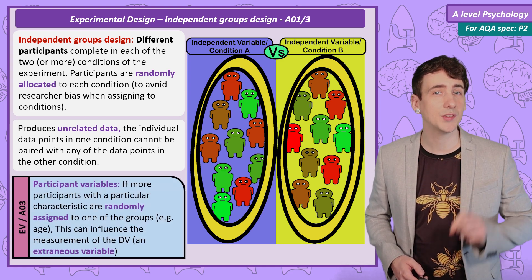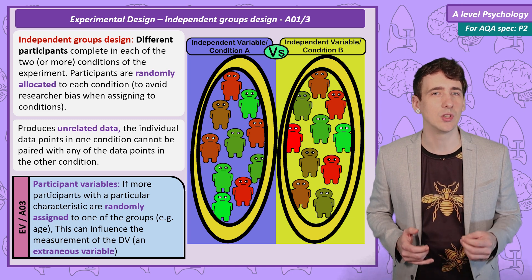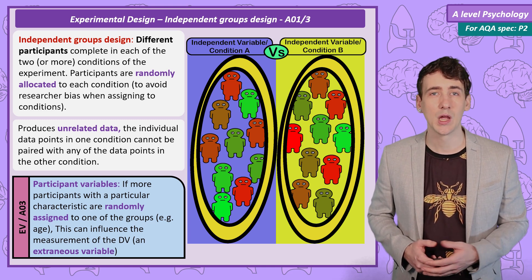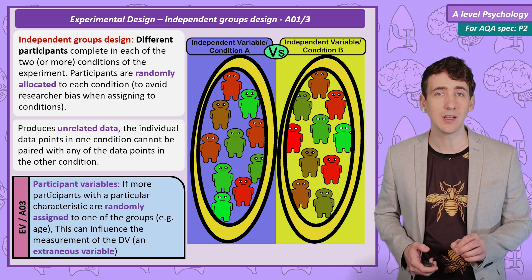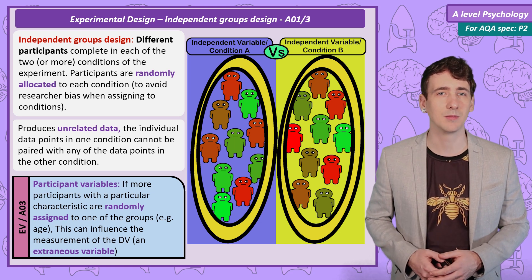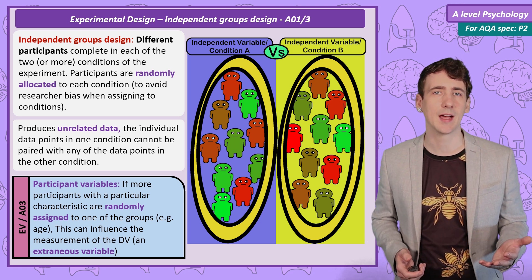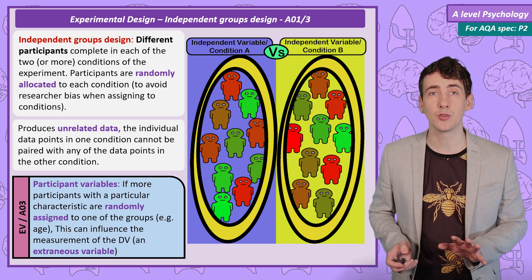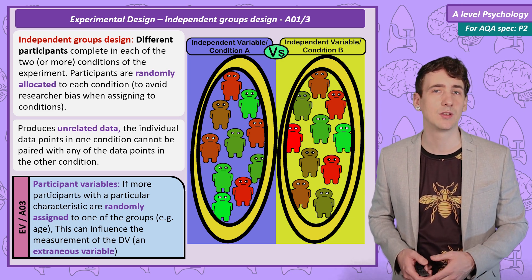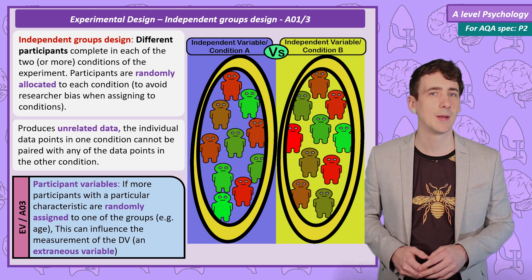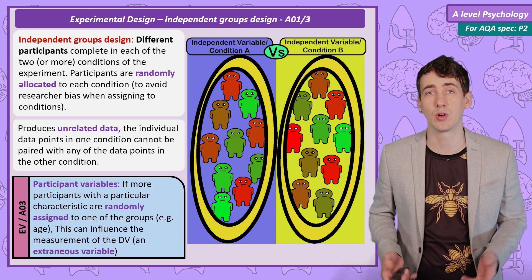Because the groups are not the same people, any change we measure may not be due to the change in independent variable, but due to participant variables — characteristics of the people taking part in each condition. For example, if your study was on temperature and reaction times, if in the random allocation to groups more young people were randomly assigned to one of the conditions, this could influence the results, maybe showing a difference between conditions that isn't really there.